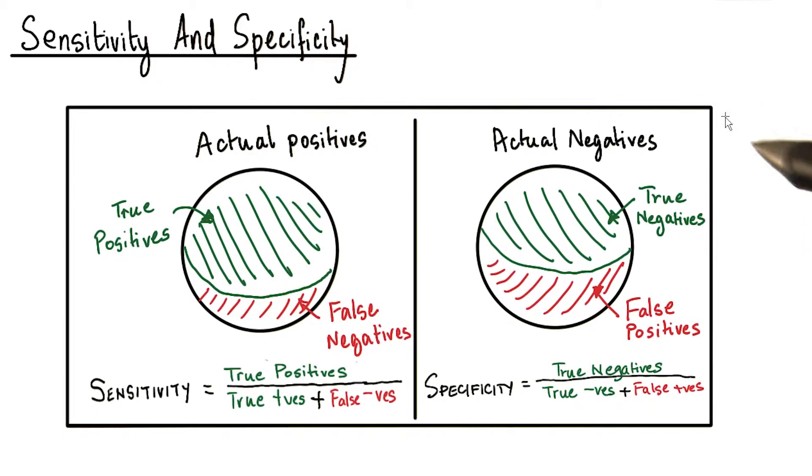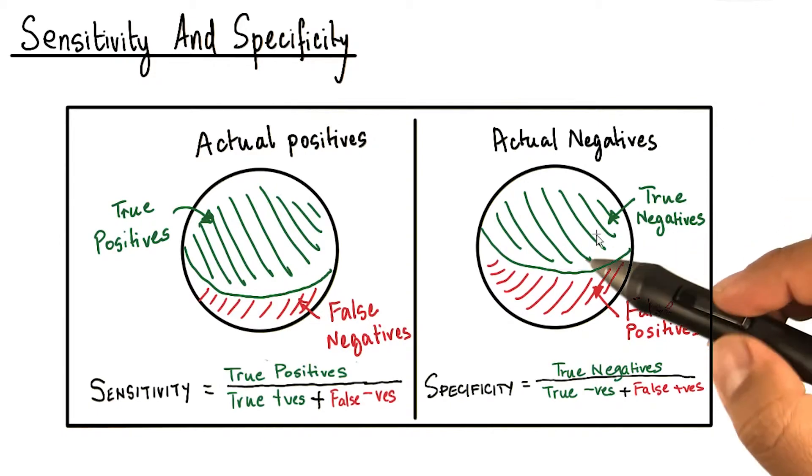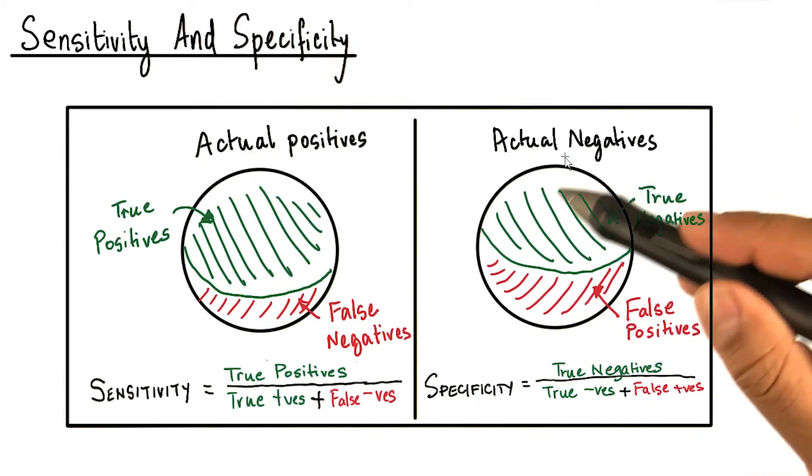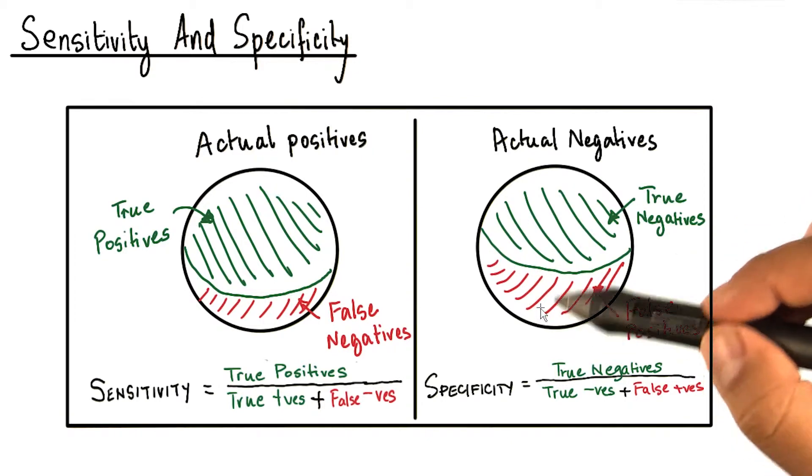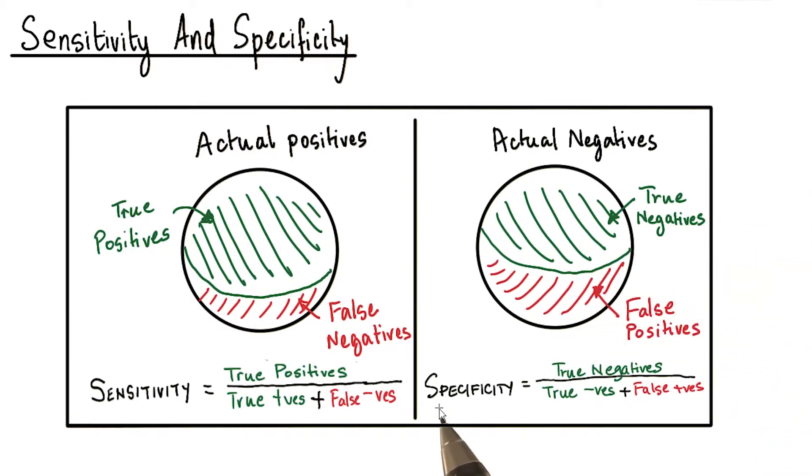Similarly, let's look at all the actual negatives. In this case, it is a sum of true negatives and the false positives. The metric specificity is defined as the true negatives divided by the sum of the true negatives and the false positives.